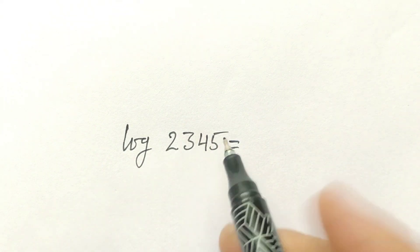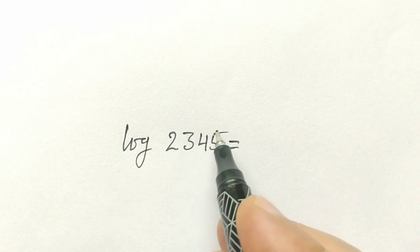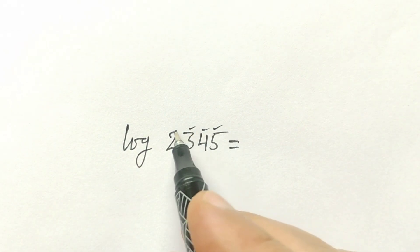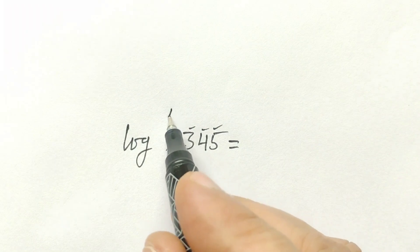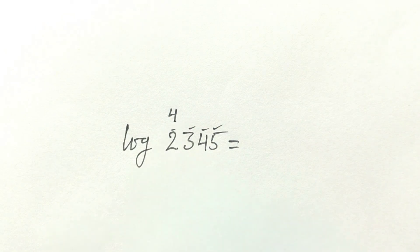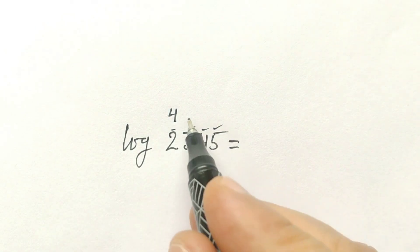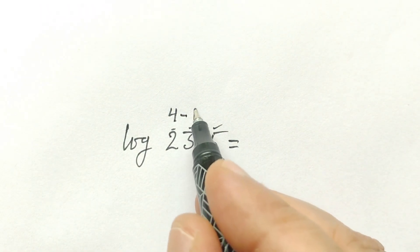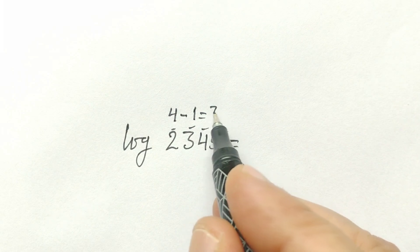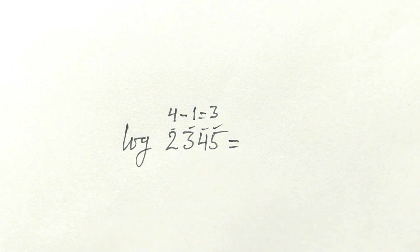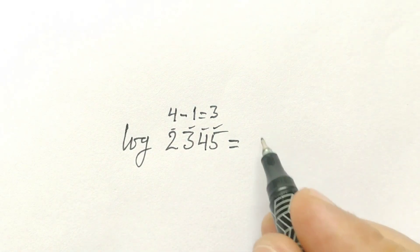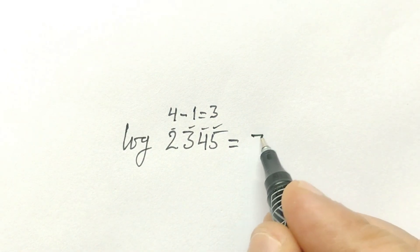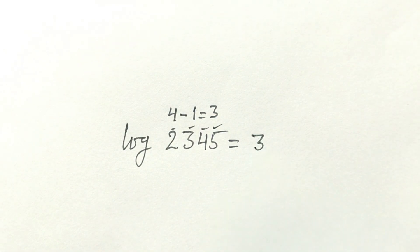First we will count the number of digits: 1, 2, 3, 4. Here there are 4 digits. We will minus 1, which equals 3. So here the characteristic will be 3.